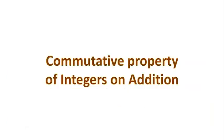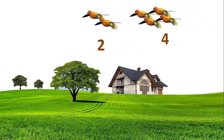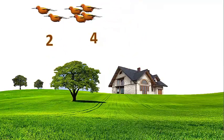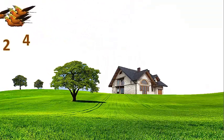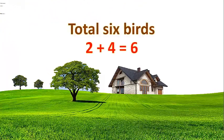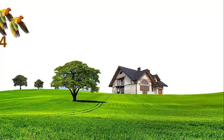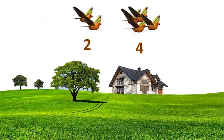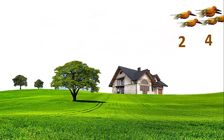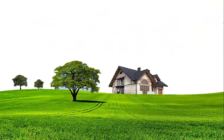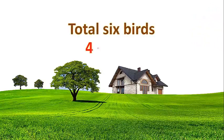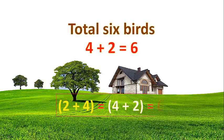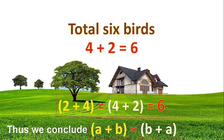Now let us see these birds — 2 in a pair and 4 in a group flying together, and totally there are 6 birds. Next, we see 4 birds flying first, followed by 2 birds. After some time, 4 plus 2 gives 6 birds flying together. So it states that 2 plus 4 is equal to 4 plus 2, which is equal to 6. Thus we conclude, a plus b is equal to b plus a.